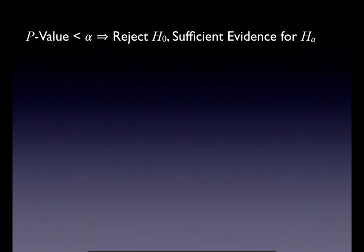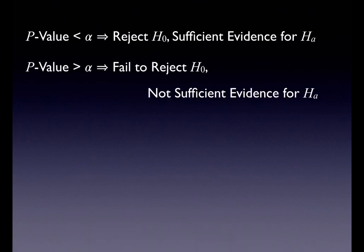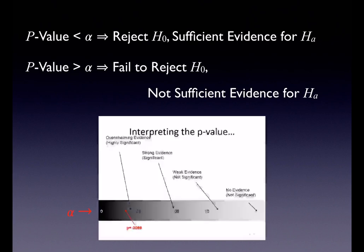If your p-value is less than alpha, you reject the null, which means you have sufficient evidence for the alternate. If your p-value is greater than alpha, you fail to reject the null, so you do not have sufficient evidence for the alternate. The lower your p-value, the less evidence you have for the null — you're that much more likely to reject it.